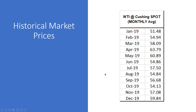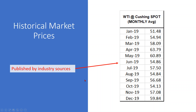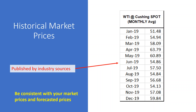The first step is to compile historical market prices. For instance, this is a 2019 schedule by month of the oil price of West Texas Intermediate at Cushing, Oklahoma spot. In January, the average spot price was $51.48 a barrel. This data is published by various industry sources — I use Ryder Scott Company for my data. You have to remember to be consistent: when you pick West Texas Intermediate for your historical prices, you have to use the futures from West Texas Intermediate oil for your future prices.